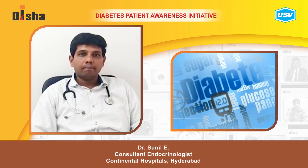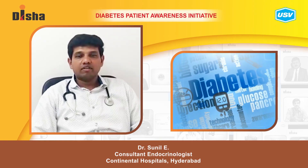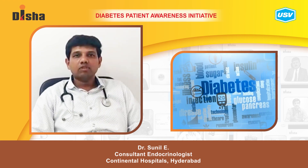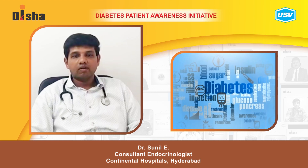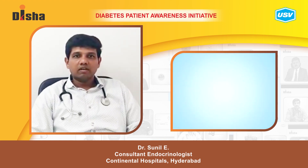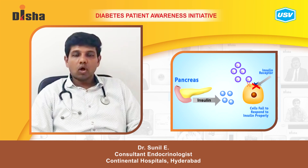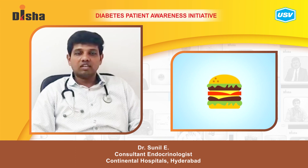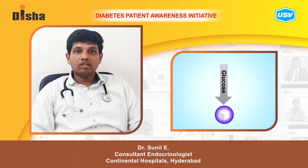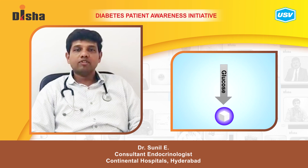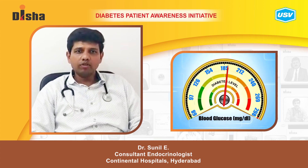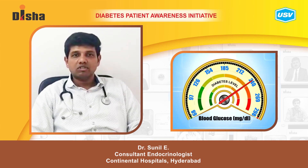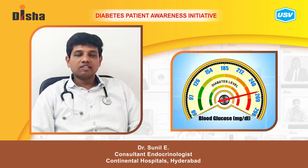I am here to talk about some basic facts about diabetes. The first question that comes to anybody's mind is what actually diabetes is. Diabetes is a state where there is absolute or relative insulin deficiency, because of which the glucose does not get absorbed into the cells but keeps circulating in the blood, and is found in very high levels. This is called diabetes.